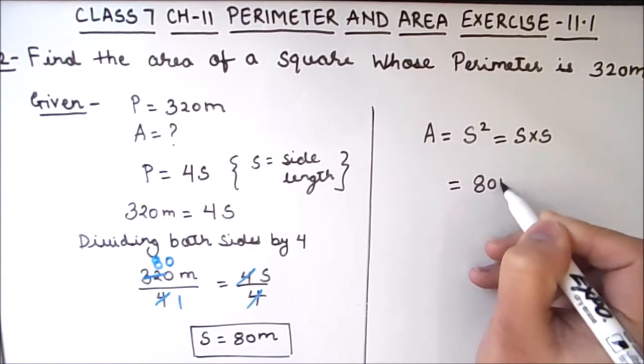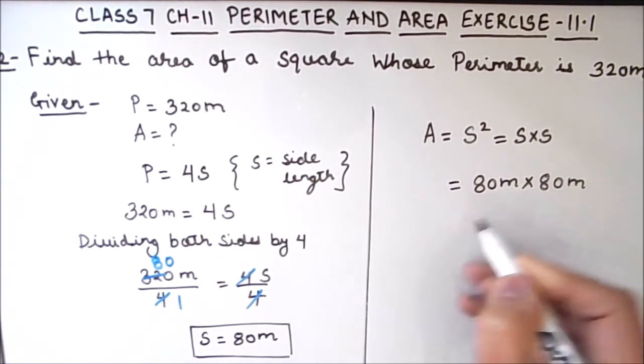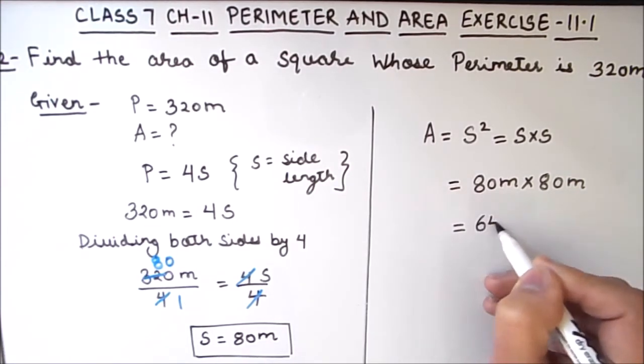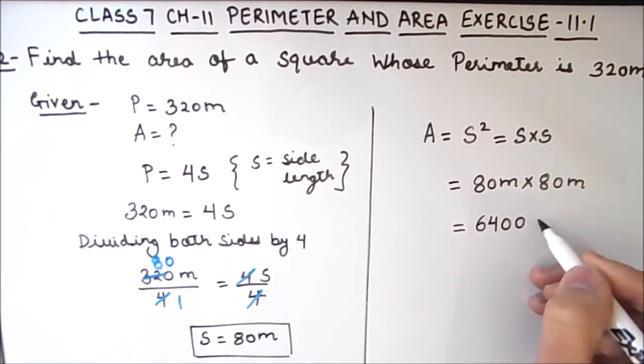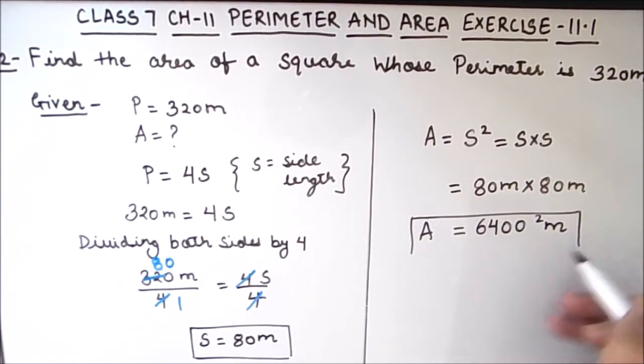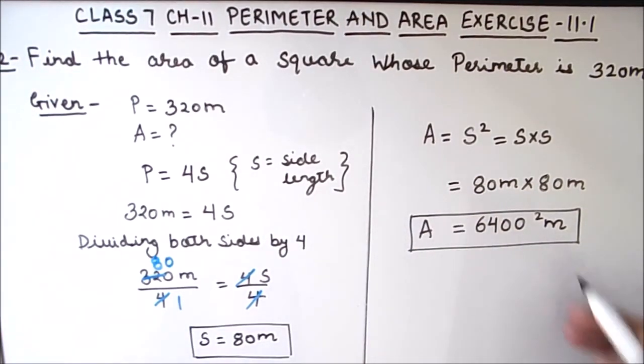So the area will be 80 meters times 80 meters, which is equal to 8 times 8 is 64 and two zeros are there. So 6400 square meters will be the area of square whose perimeter is 320 meters. This is our final answer.